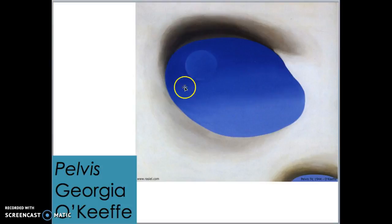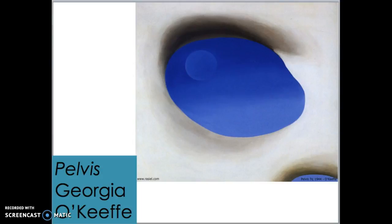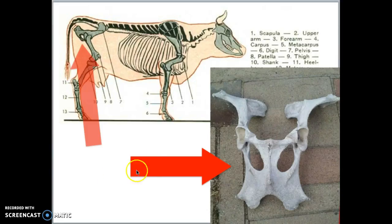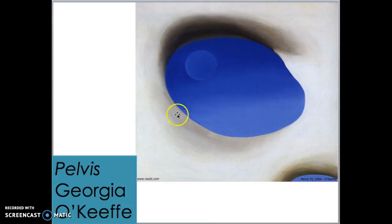This one is interesting — it's called Pelvis. It kind of looks like a white frame with a blue sky and the moon in between. But actually, the pelvis is a bone right here on our body, and the pelvis has a little hole in it. This was a bone she had found from a bull — on a bull the pelvis has a little hole in it. She would have held that up to the sky and looked through it. That's why this painting is called Pelvis: she's using the pelvis bone as a frame for the sky.